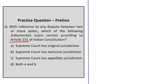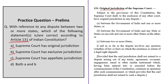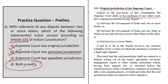A practice question on Article 131 of the Indian Constitution: Statement A says the Supreme Court has original jurisdiction — correct. Statement B says the Supreme Court has exclusive jurisdiction — also correct, as no other court can hear matters mentioned in Article 131, stated in the article as 'to the exclusion of any other court.' Statement C says the Supreme Court has appellate jurisdiction — this is not under Article 131. The correct answer is option D, both A and B.